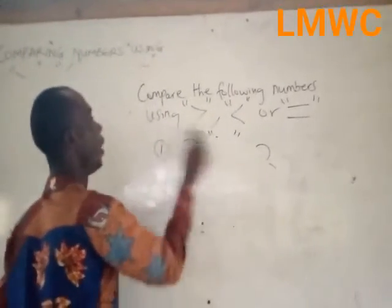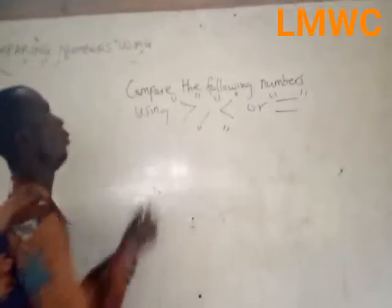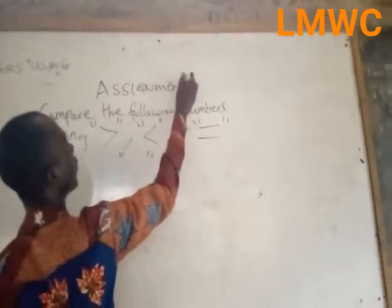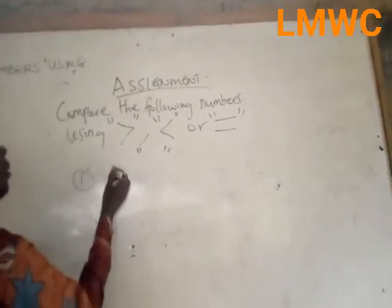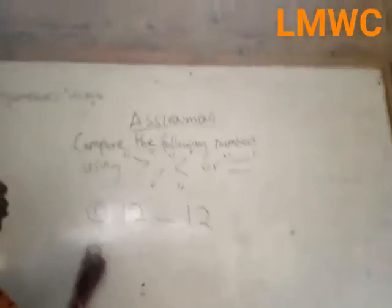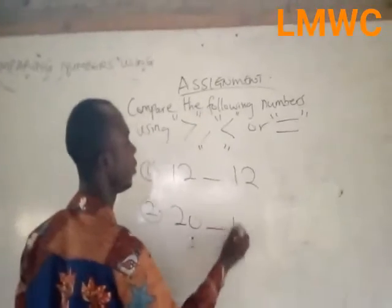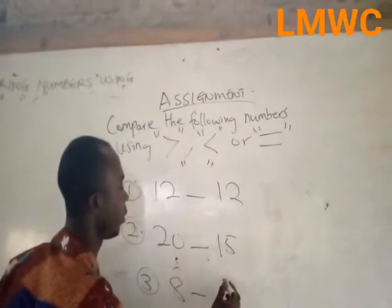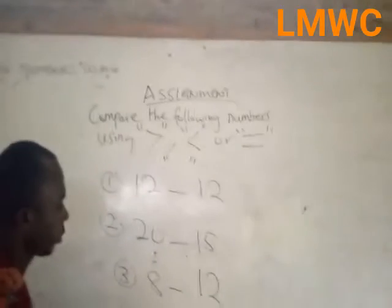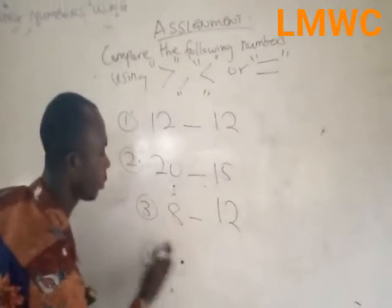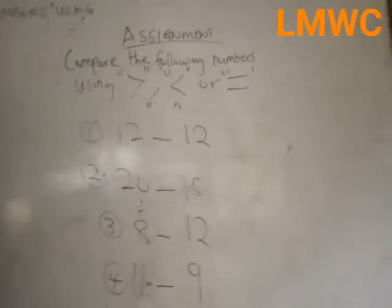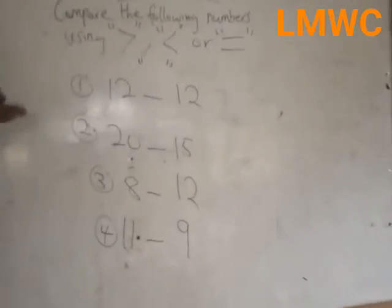Let me give my primary students an assignment. Assignment: compare the following — 2 and 20, 15 and 13, 8 and 12, 4 and 15, 11 and 9. This is the assignment I have for my primary students. Thank you, and have a nice day.